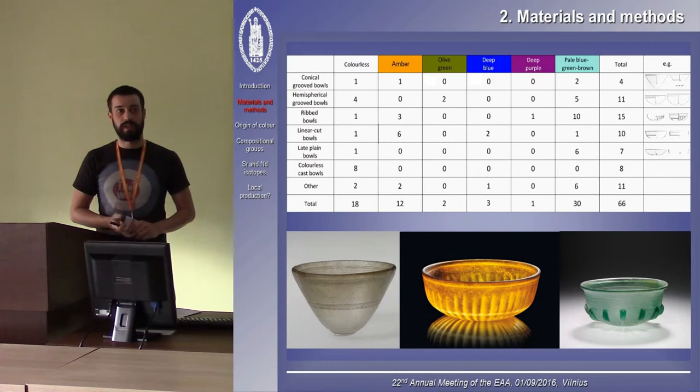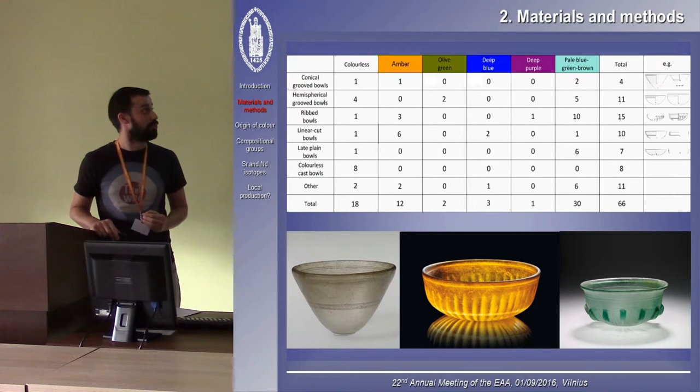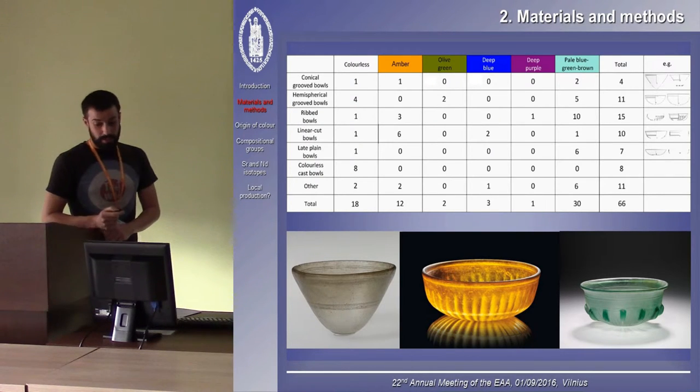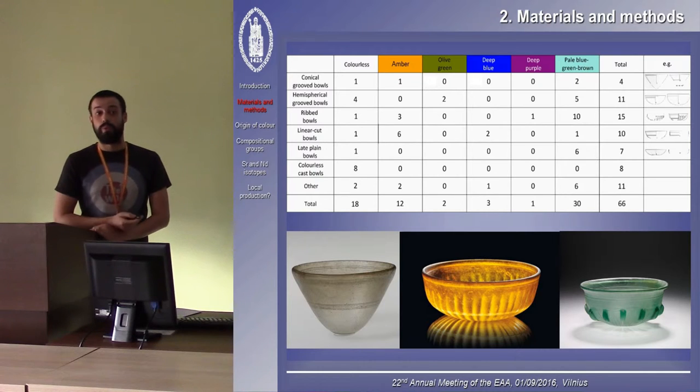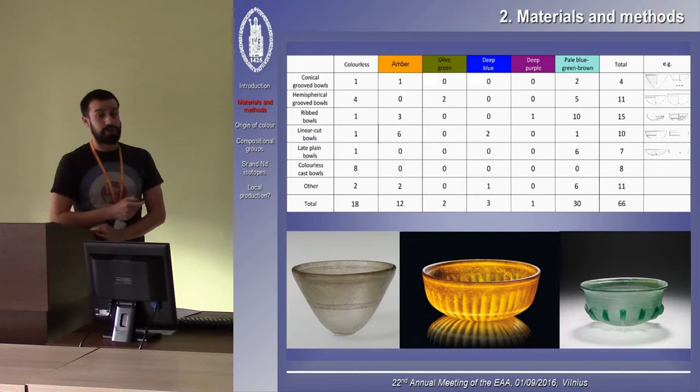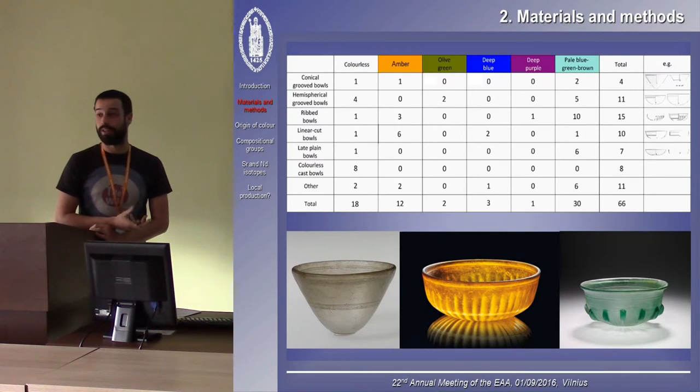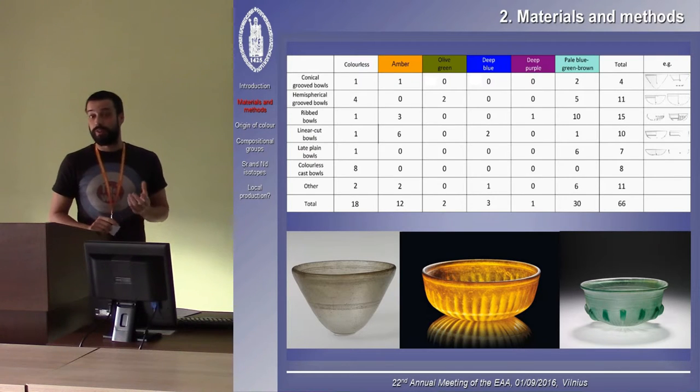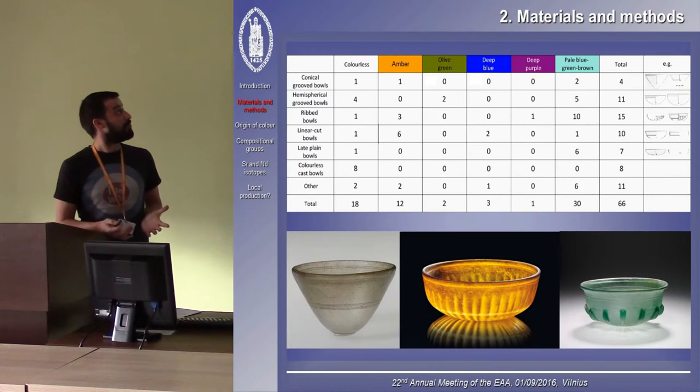Most Roman glasses had a slight bluish-greenish tint, and this was because there are iron impurities in the sand, and these give this light greenish or bluish tint to the glass. We analyzed all these samples with electron microprobe, so we determined the major elemental compositions. Our results indicate that the vibrant colors were achieved by adding specific elements, such as copper and cobalt to the glass, or by very carefully controlling the furnace conditions, so reducing or oxidizing atmospheres. All very interesting stuff that I don't have time to discuss today.